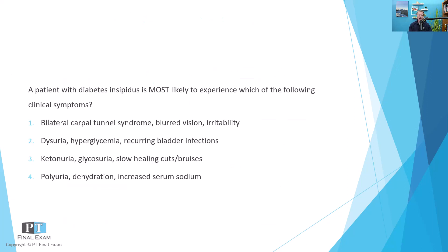Here's the practice question: A patient with diabetes insipidus is most likely to experience which of the following clinical symptoms? One: bilateral carpal tunnel syndrome, blurred vision, irritability. Two: dysuria, hyperglycemia, recurring bladder infections. Three: ketonuria, glycosuria, slow healing cuts and bruises. And four: polyuria, dehydration, increased serum sodium.